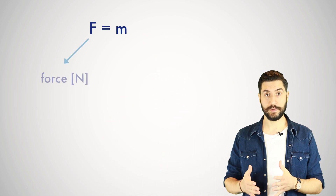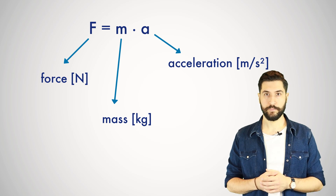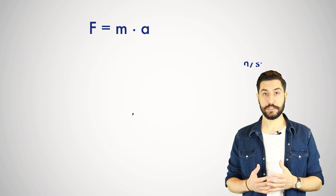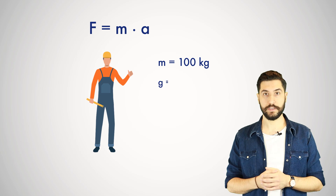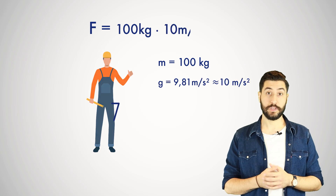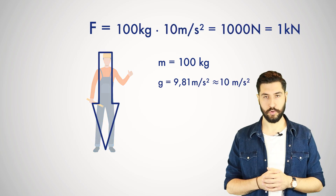The well-known formula for this is force equals mass times acceleration, and the unit in SI is Newton. A good guide value is, for example, a well-trained construction worker with a weight of 100 kg, who causes a force of 1 kN due to the acceleration of gravity. We engineers consider forces to be somewhat simplified because our calculations are usually idealized.